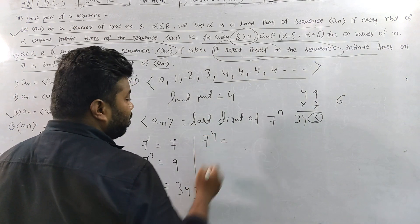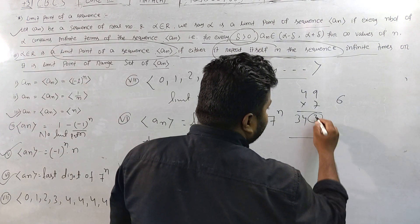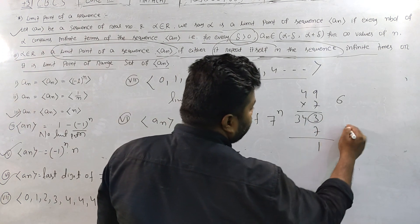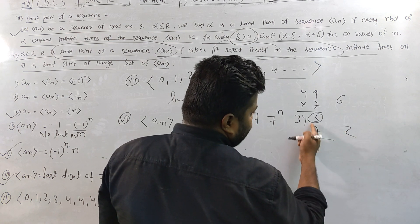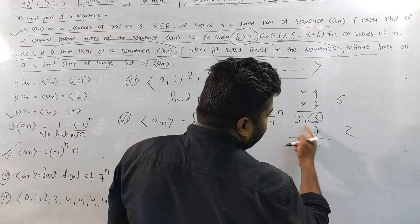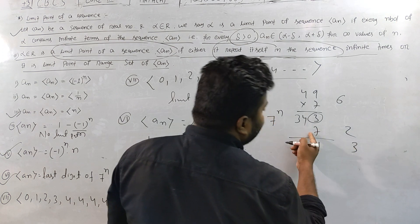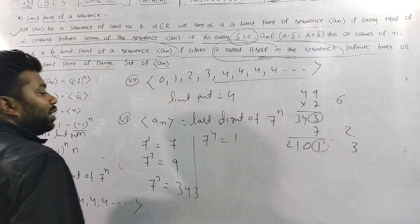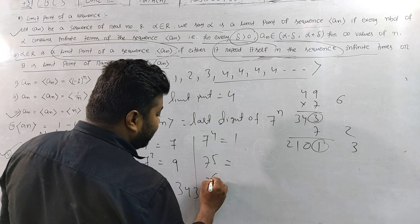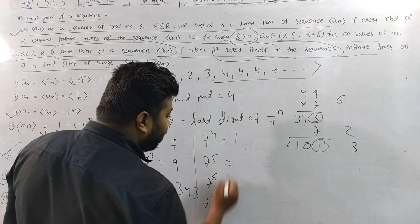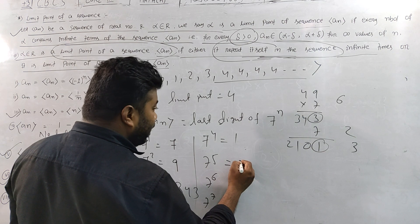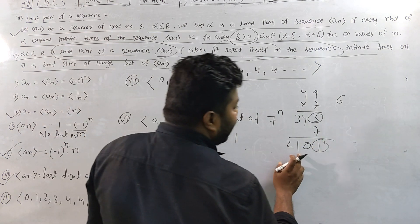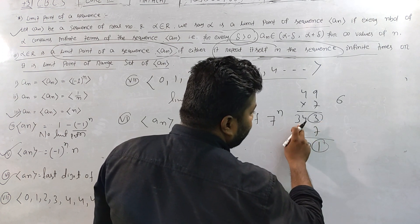7^4 = 2401, last digit 1. So the last digits of 7^n cycle as 7, 9, 3, 1 and then repeat. So 7^5 ends in 7, 7^6 ends in 9, 7^7 ends in 3, and so on.